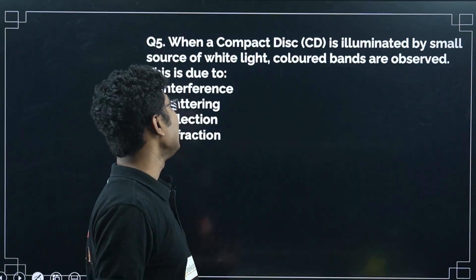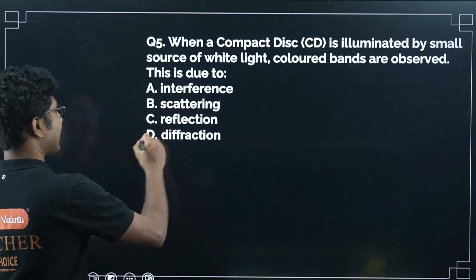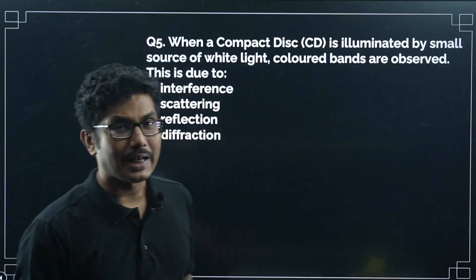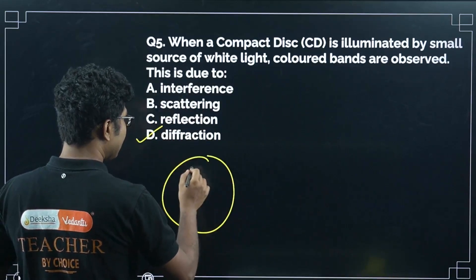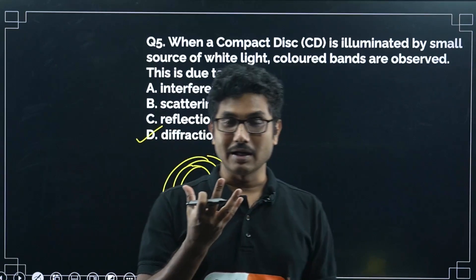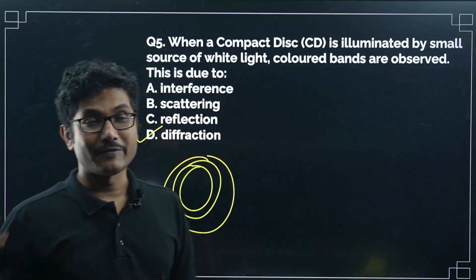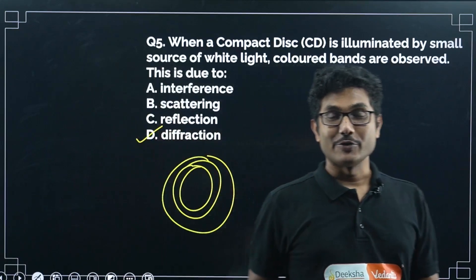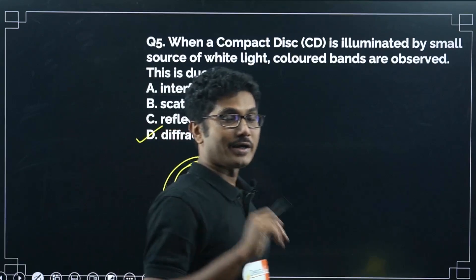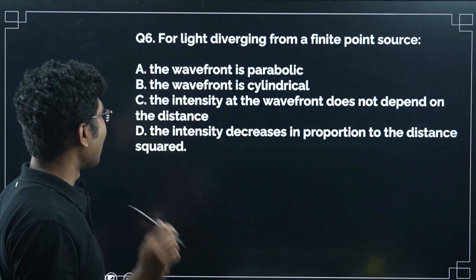When a compact disc is illuminated by white light, colored bands are observed. This is due to diffraction — diffraction can happen from reflection, and the disc has very sharp edges so light bends around them. For interference we need slits. Nowadays, tell me in the comments what you use to transfer data — pen drive or something else?